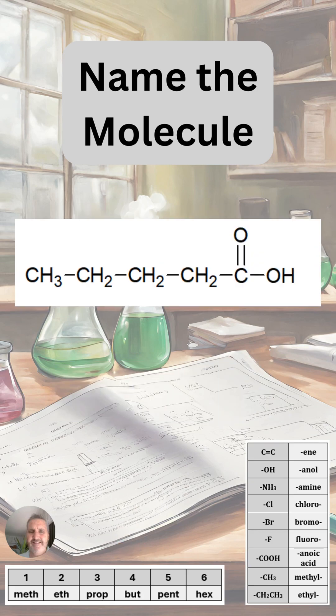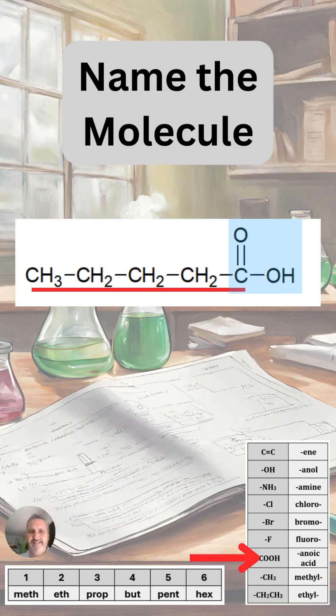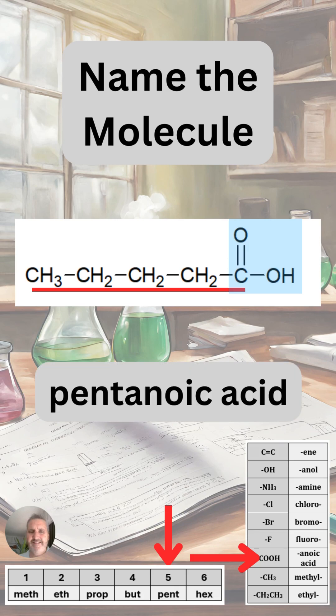Here is an interesting molecule. We can see the functional group on the right is a bit complex — it has a carbon with a double bond oxygen coming off the top, also joined to an OH or hydroxy group on the right. We take the whole functional group together to classify it as a carboxylic acid, so it's going to have the ending '-anoic acid'. We can see in the longest chain we have five carbons, which is 'pent', so we're going to call this molecule pentanoic acid.